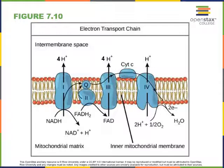Cytochrome C will be oxidized by complex 4. The full name of complex 4 is cytochrome C oxidase. Cytochrome C oxidase transfers the electrons from cytochrome C to oxygen, combining one half of a molecule of oxygen with two hydrogen ions forming water. The oxidizing agent in this reaction is oxygen, and cytochrome C becomes oxidized as oxygen becomes reduced to form water.